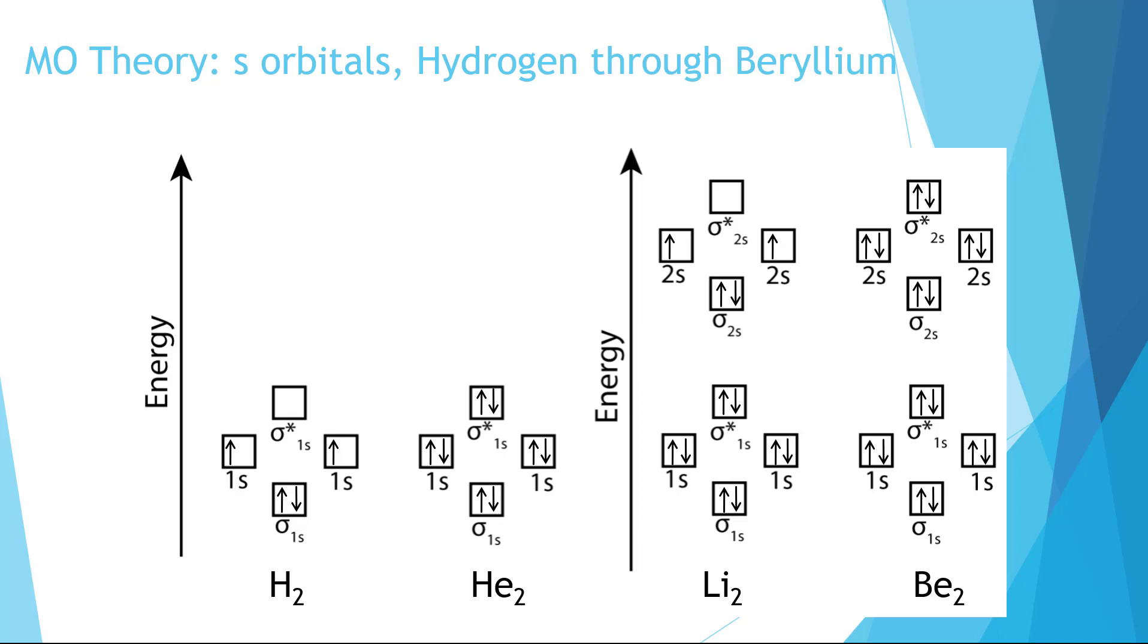Often for MO diagrams, you'll only see the valence electrons drawn. So for lithium and beryllium, they might only show the n equals 2 level drawn. This is okay, and you can do it either way.